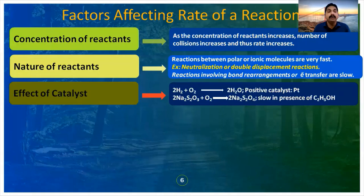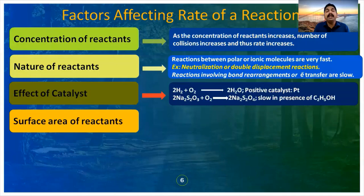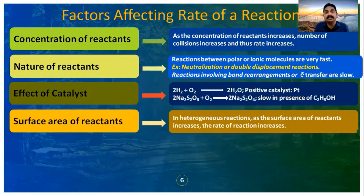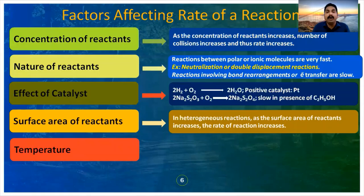The fourth factor affecting rate of reaction is surface area — mainly in heterogeneous reactions. As the surface area of the reactants increases, the rate of reaction increases. The fifth factor is temperature. In most reactions, if we increase the temperature by 10 degrees Celsius, the rate of reaction usually doubles — changing from 2 to 3 times — as studied in the Arrhenius equation.